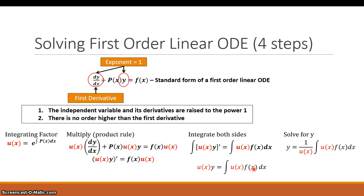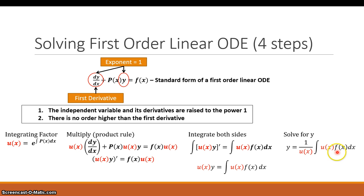Finally, the fourth step: get to the solution by solving explicitly in terms of y — the variable you want to understand and see how it's changing with respect to time. We divide both sides by the integrating factor, giving us: y = (1/u(x)) · ∫u(x)·F(x) dx. So those are the four steps of solving a first-order linear differential equation: identify and write in standard form, compute the integrating factor, multiply through and integrate both sides, then solve for y.